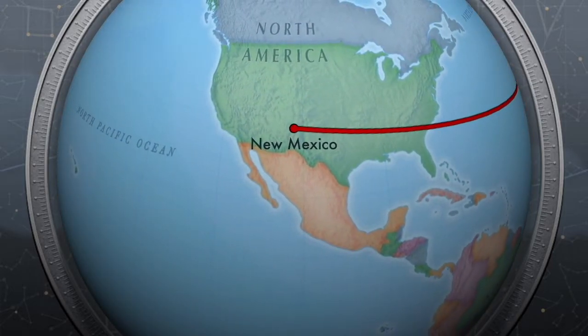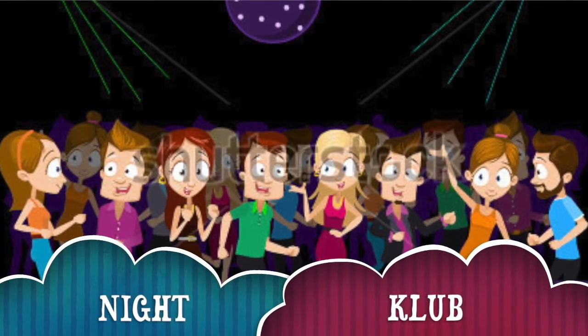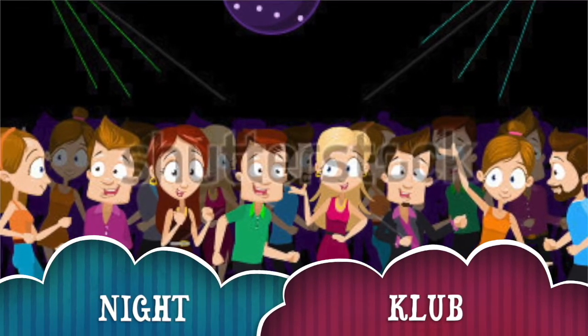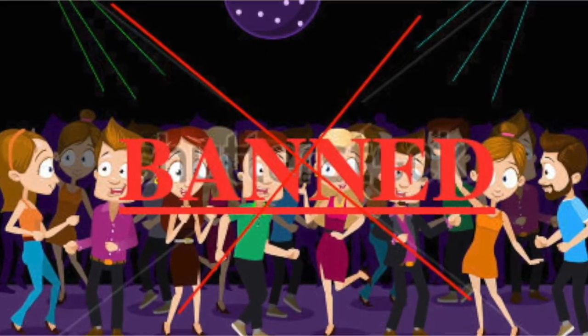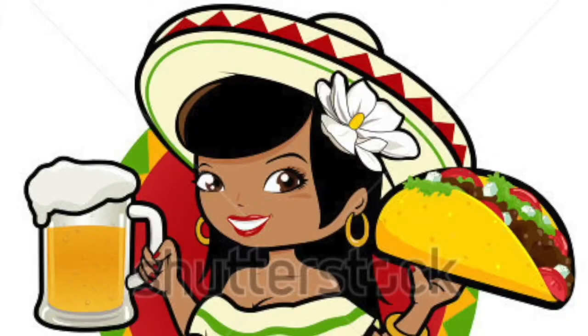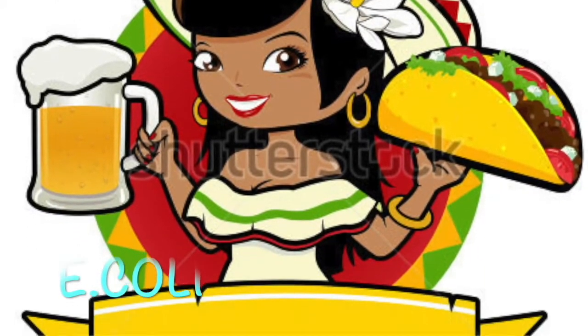And he finds everything the same as his country but one new thing which are nightclubs because they are banned in Arab countries. So he gets into a nightclub and meets a chick, her name is E. Kolai.